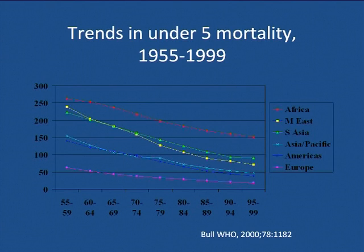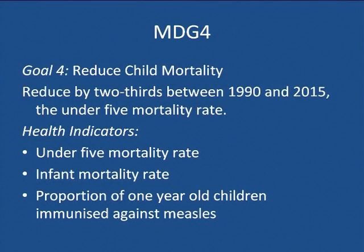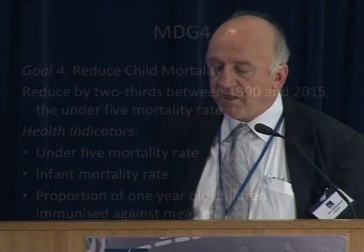These curves represent under-5 mortality over the past 50 years by region. The key things to look at are the African one, which is in red — you can see it has been somewhat higher and the decline over the past 50 years has been somewhat flatter. MDG-4 is to achieve a reduction of child mortality of two-thirds by 2015 based on 1990 levels — a 25-year period — and was based on an extrapolation from these curves. Looking at the African curve, it would be quite optimistic to think you were going to get a two-thirds reduction over 25 years based on the shape of that curve.